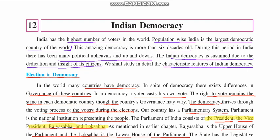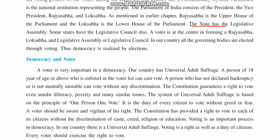Each state also has legislative assemblies. There is an upper house in certain states and a lower house in each and every state. The upper house is known as Vidhan Parishad, while the lower house is known as Vidhan Sabha. The voter is at the center of the formation of Rajya Sabha, Lok Sabha, legislative assemblies, and legislative councils.